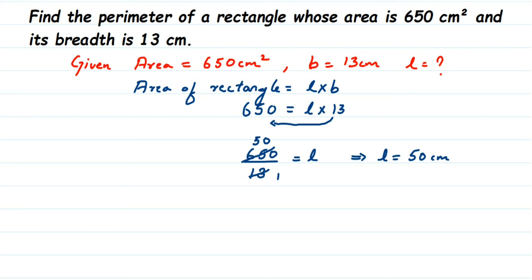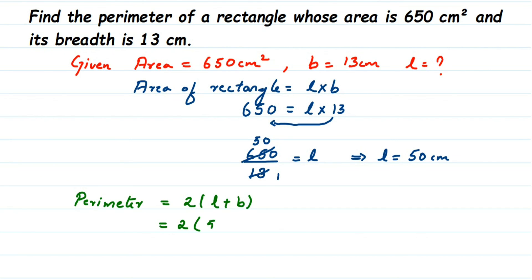Now we have both length and breadth, so we find the perimeter. The perimeter of a rectangle formula is: perimeter equals 2 into (l plus b). Some people also write it as 2l plus 2b — both are correct. Substituting the values: 2 into (length 50 plus breadth 13).